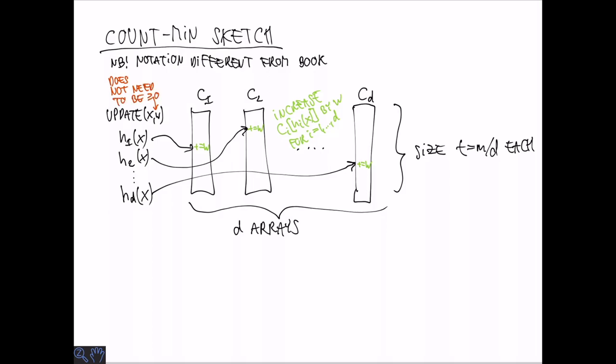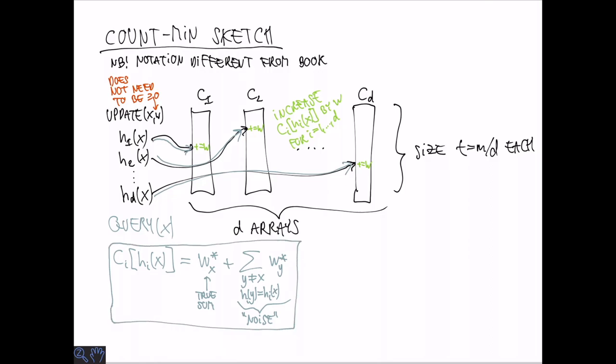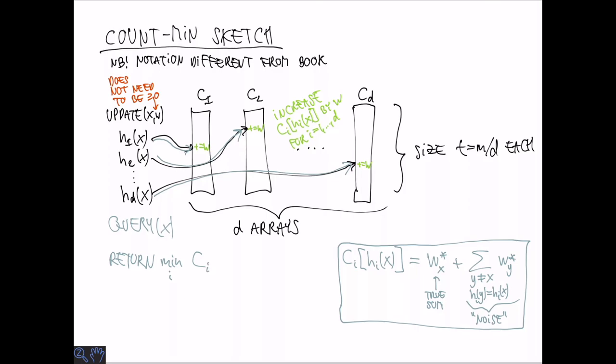The weight update does not actually need to be greater than or equal to zero. It's perfectly possible to do negative updates which correspond to decreasing our weight. The query proceeds pretty much the same way. We evaluate the hash functions look up the values and we look at the weights that are reported in there. And it's easy to see that what we get is going to be the true sum plus some contribution from other elements. And the elements that we get contributions from are those that have hash collisions with X. Let's call this sum the noise sum. What we're going to return is the entry that has the smallest noise. So that's the minimum over all i of C_i of h_i of X. So this is going to be equal to the true sum plus the minimum of all the noise terms.